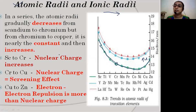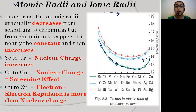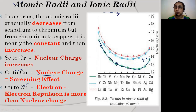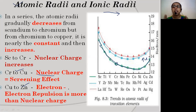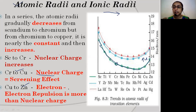From chromium to copper, nuclear charge is increasing and screening effect is also increasing - they oppose each other. When both effects become equal, the radii remains constant from chromium to copper. At the end of the series, all electrons become paired, so electron-electron repulsion increases. Electrons try to move away from each other, and this repulsion exceeds the nuclear charge, causing atomic radii to increase slightly.